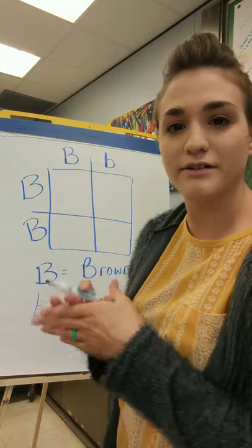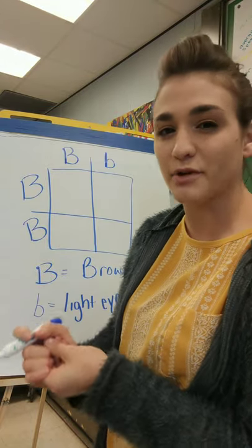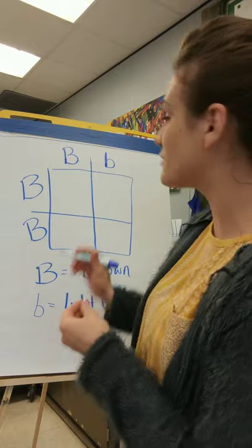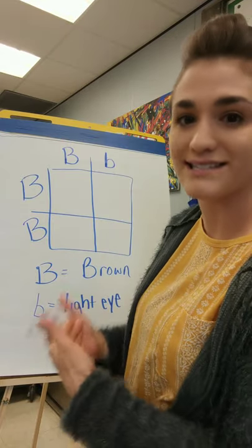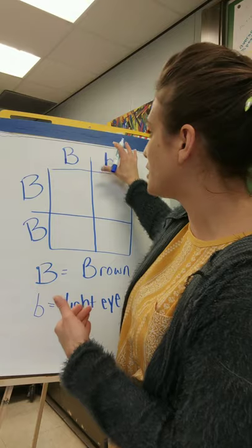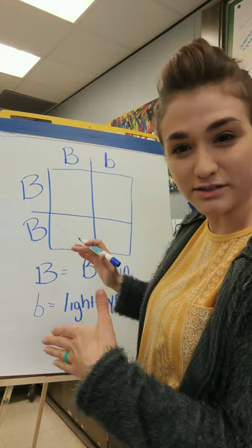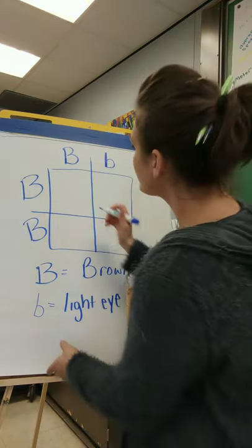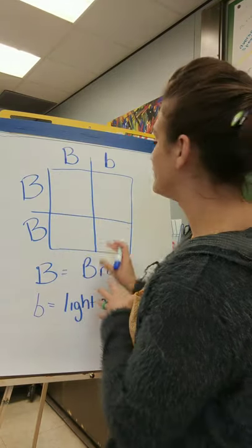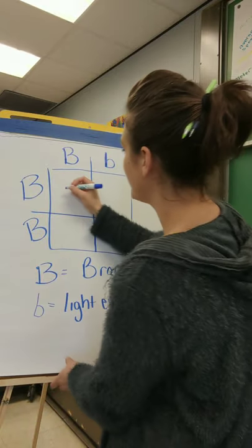This means the father has brown eyes, because the capital letter is dominant — brown eyes are dominant in people. If you have that capital letter, that trait will always show and it will hide the lowercase letter, or the recessive gene. So this father has brown eyes but carries the gene for light-colored eyes.